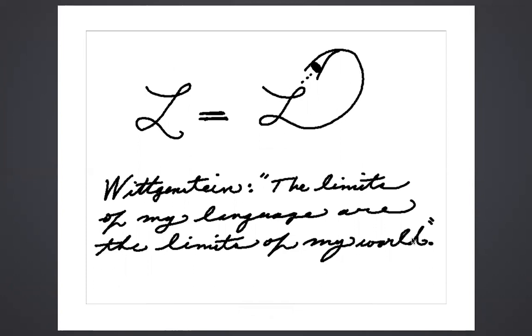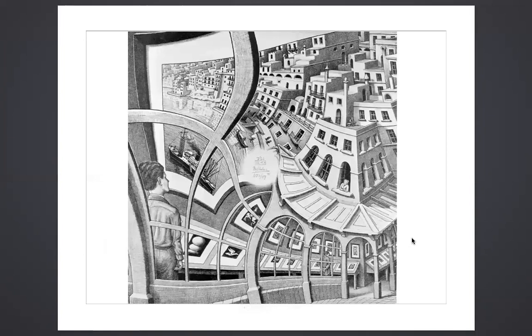Wittgenstein said, the limits of my language are the limits of my world. He also said, whereof one cannot speak, one must remain silent. But that does not mean that one must remain silent. It just means that one must engage in playful and in significant speech. So that the observer and his world are one.